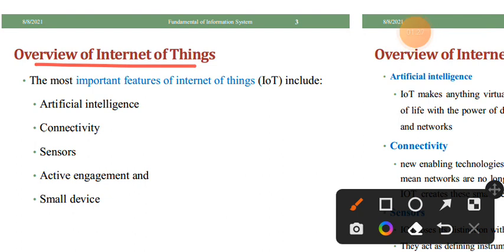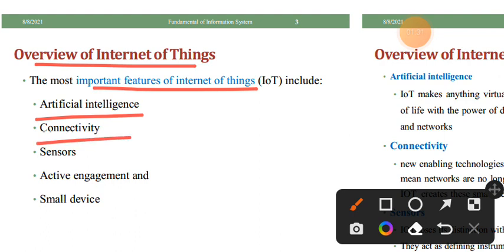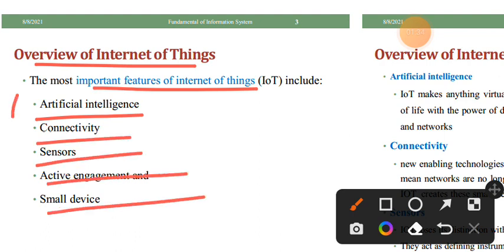The most important features of Internet of Things are: artificial intelligence, connectivity, sensors, activity engagement, and small devices.